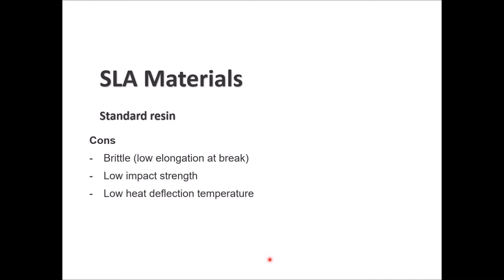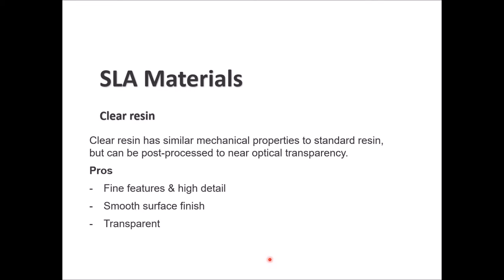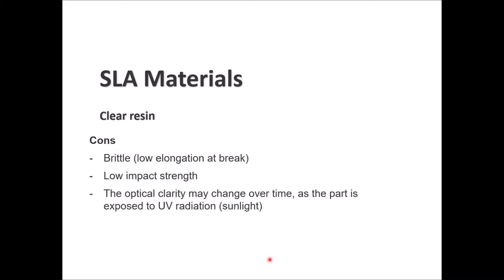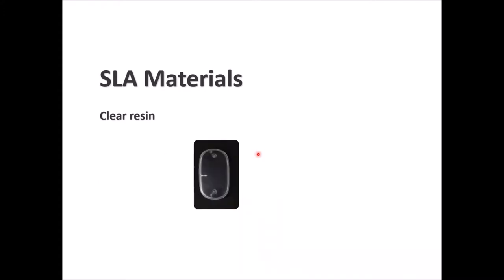Clear resin has mechanical properties similar to standard resin, but the difference is it can be post-processed to almost optical transparency, giving a very good clear final finish for the part. Good sides: fine features, high detail, smooth surface finish, and it can give you a transparent part. Bad sides: brittle, low elongation at break, low impact strength, and the optical clarity can change over time, especially if the part is exposed to ultraviolet radiation or sunlight.